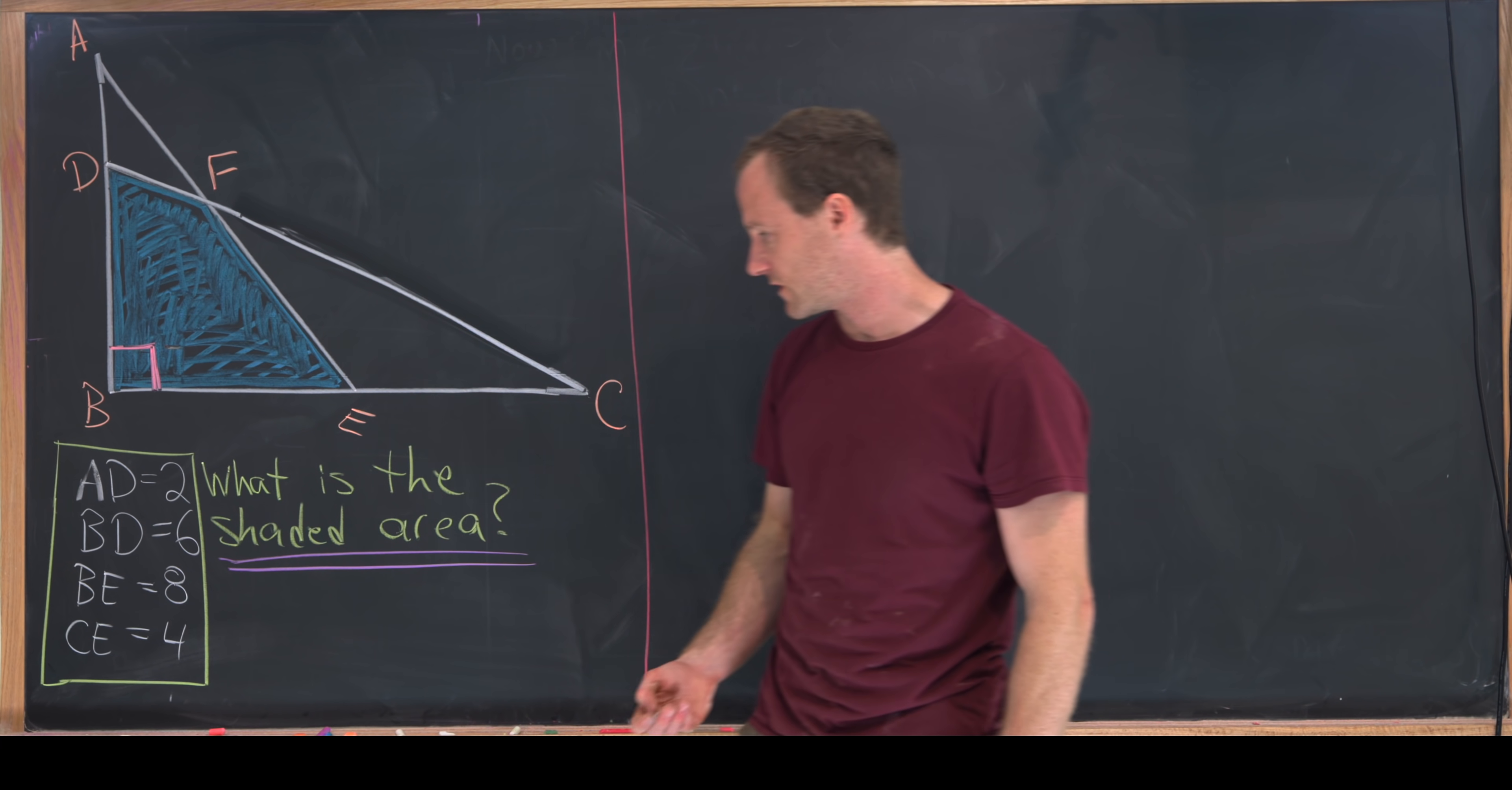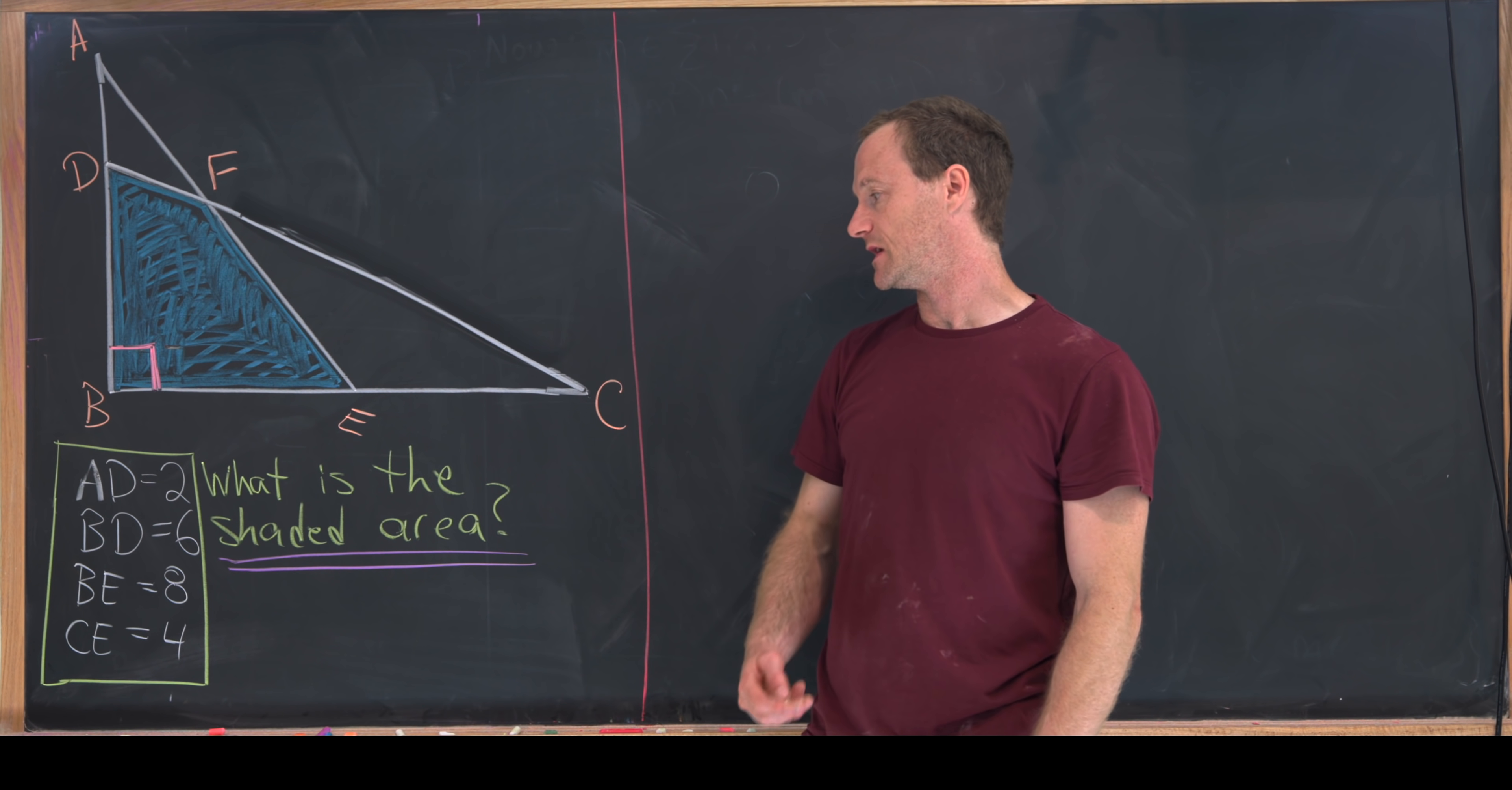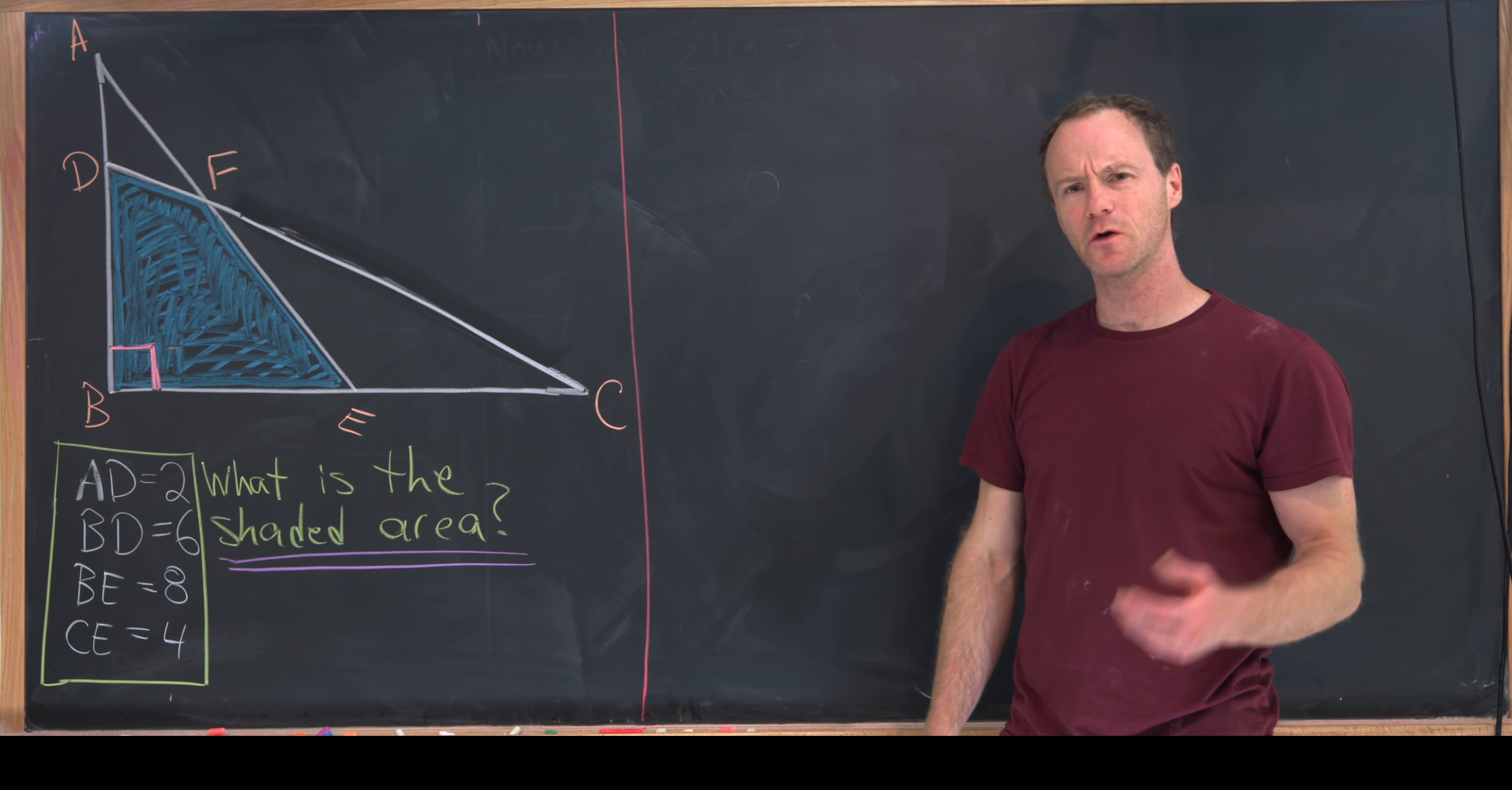Furthermore, we're given the following information about some side lengths. Line segment AD is 2 units, BD is 6, BE is 8, and CE is 4. Our goal is to find this shaded area.